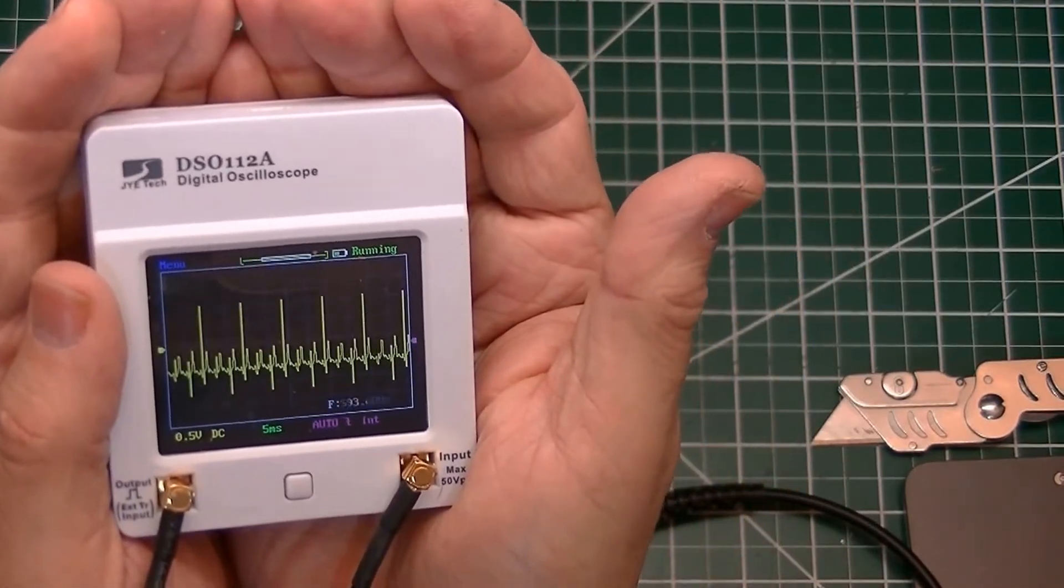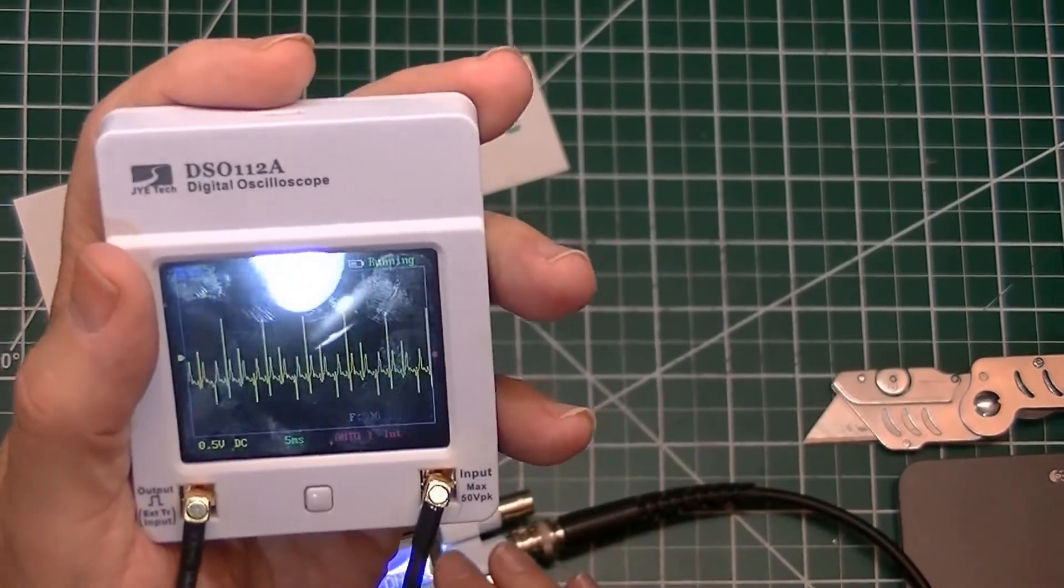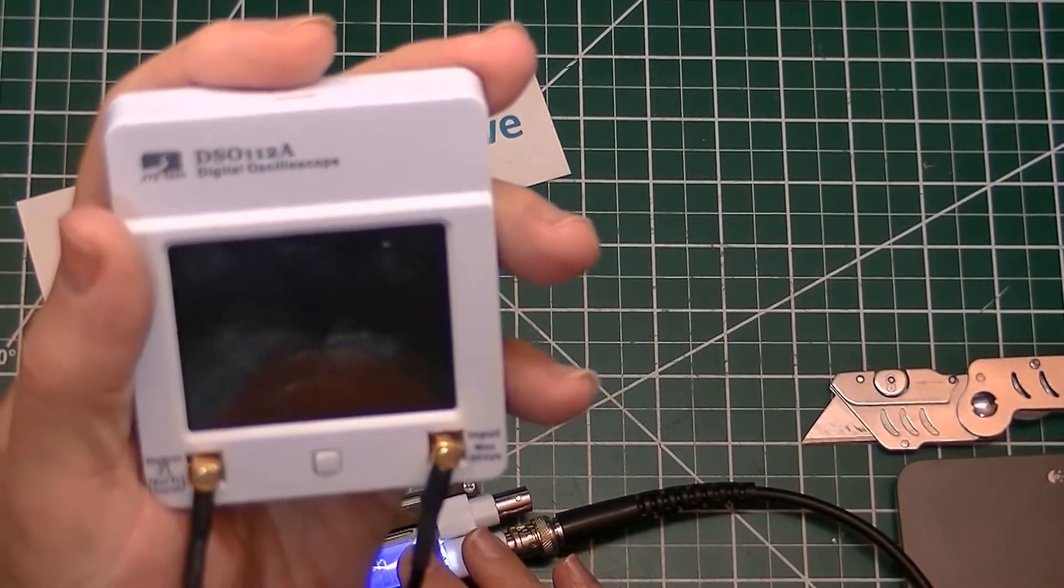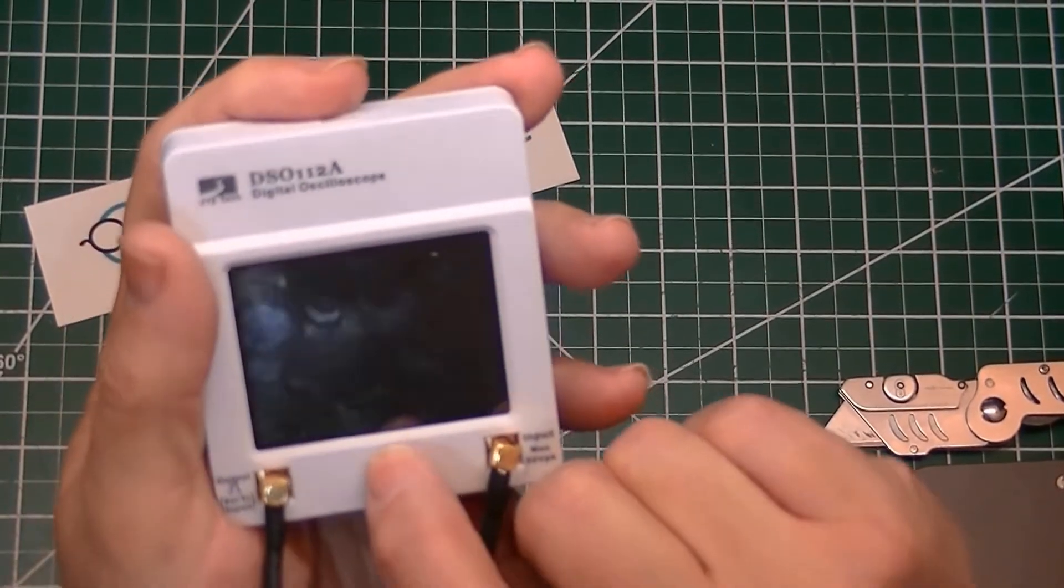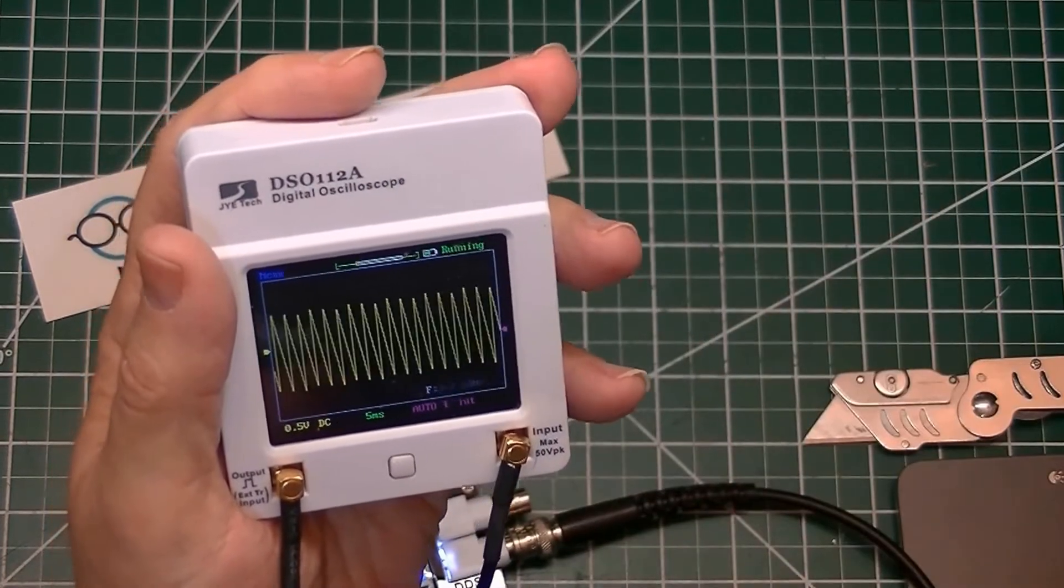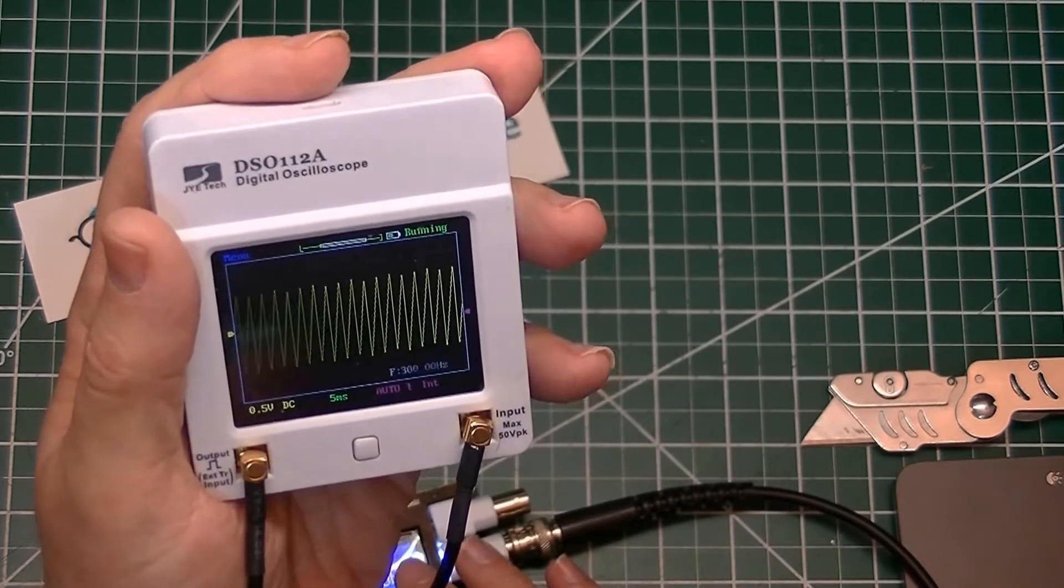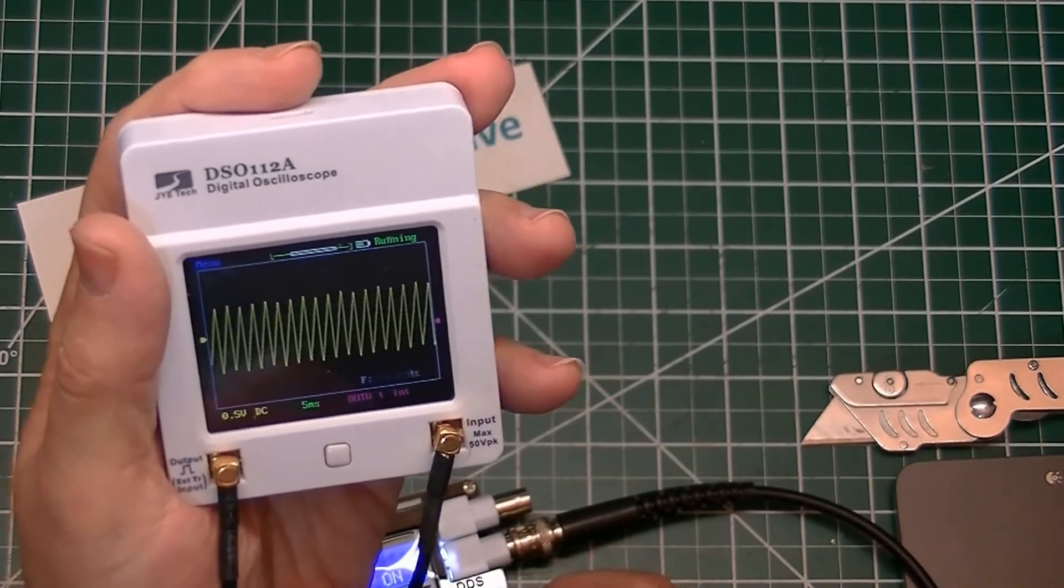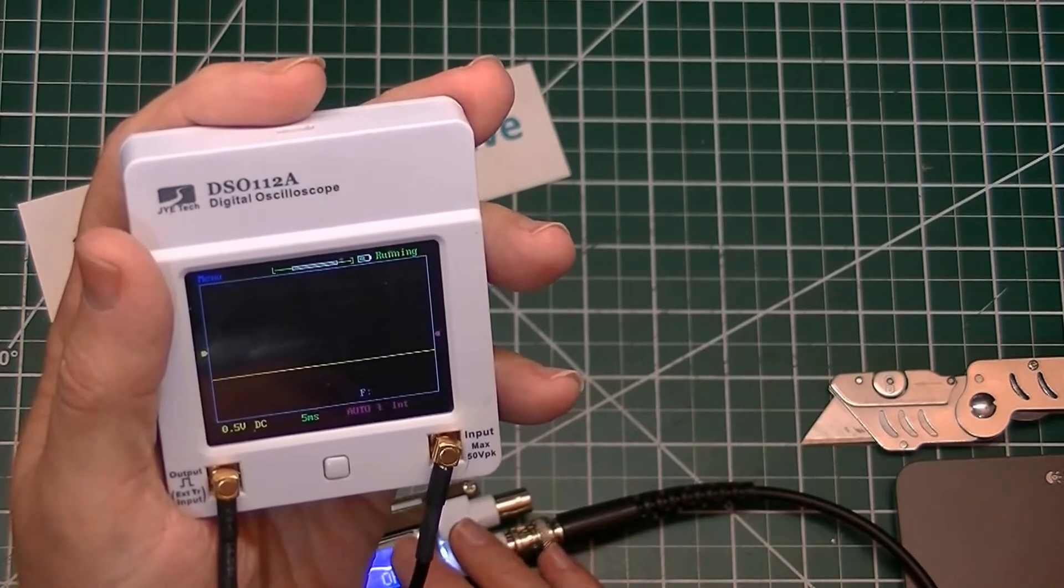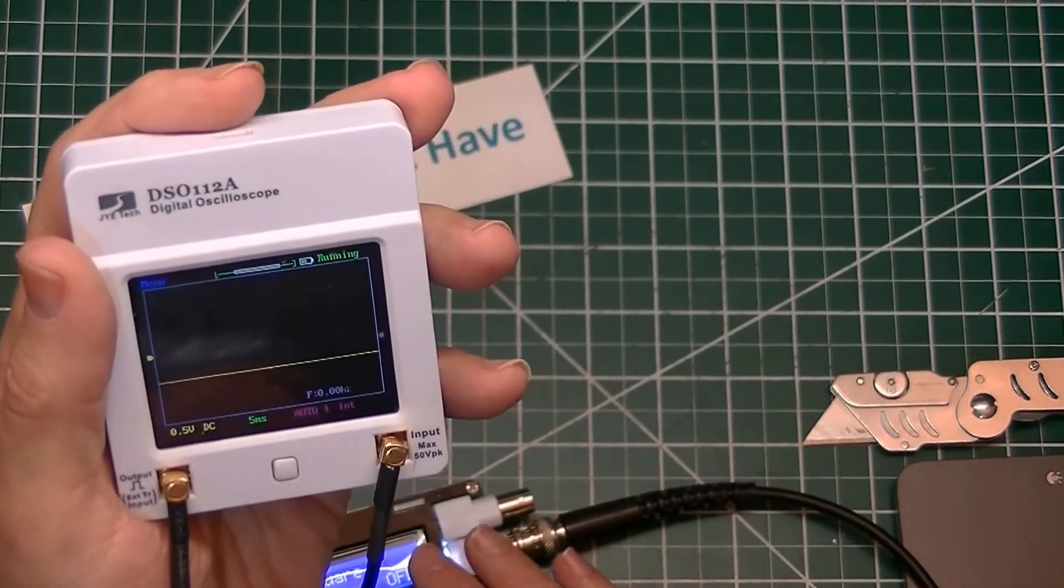There we go. So we'll switch that, turn it off. Reverse sawtooth. The little oscilloscope shuts off after a while to save power. And there is the reverse sawtooth. There's the regular sawtooth, doing the amplitude down just a little bit. Triangle. Square.